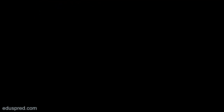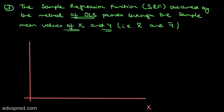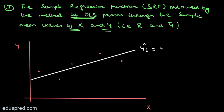The third useful result is that the sample regression function (SRF) obtained by the method of OLS passes through the sample mean values of x and y — that is, the point (x-bar, y-bar). Consider a scatter plot with x on one axis and y on the other. If we fit a sample regression line using OLS, its equation is ŷi = b1 + b2*xi.